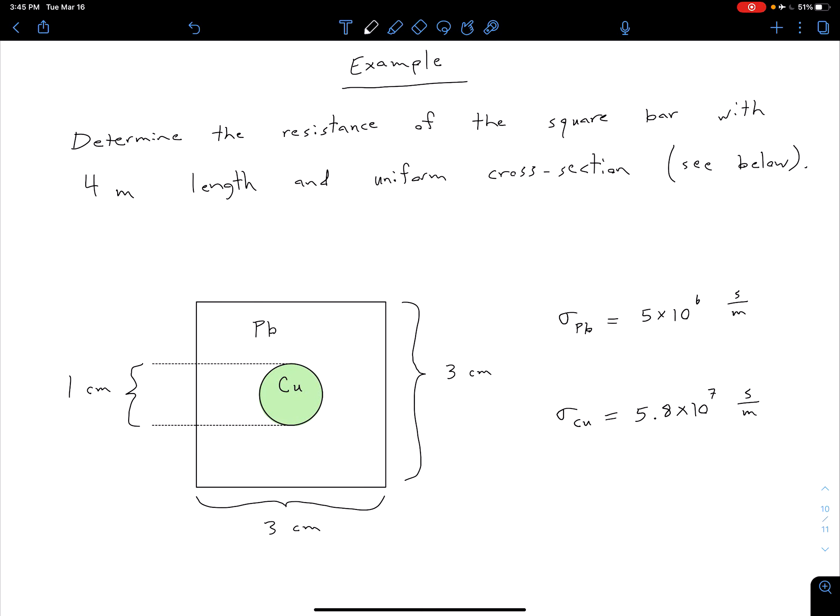In this example, what we're trying to do is determine the resistance of some square bar. We're told that this bar has 4 meter length and it has a uniform cross-section, as we see below in this picture.